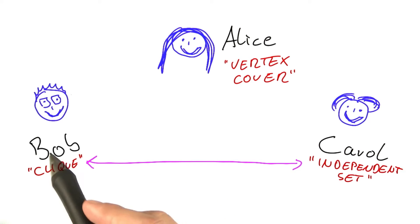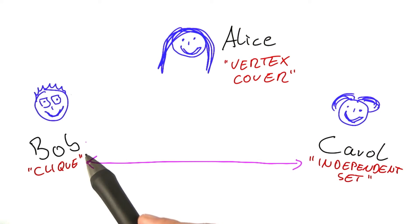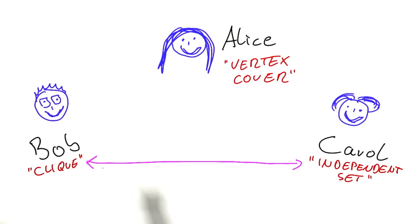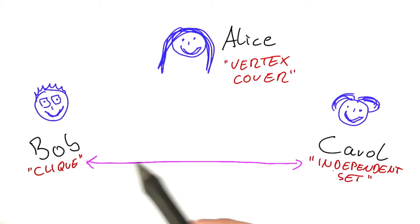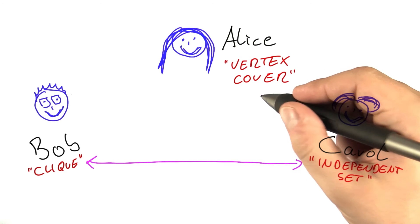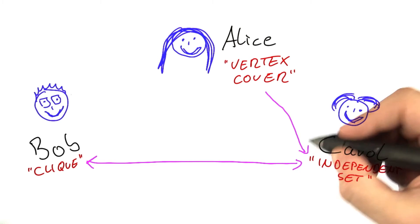So if any of them discovers a good algorithm for clique, then they have not only solved clique but also independent set. So if just one of those two problems is solvable in polynomial time — or in other words, if just one of those two problems turns out to be tractable — then the other problem will be tractable as well.